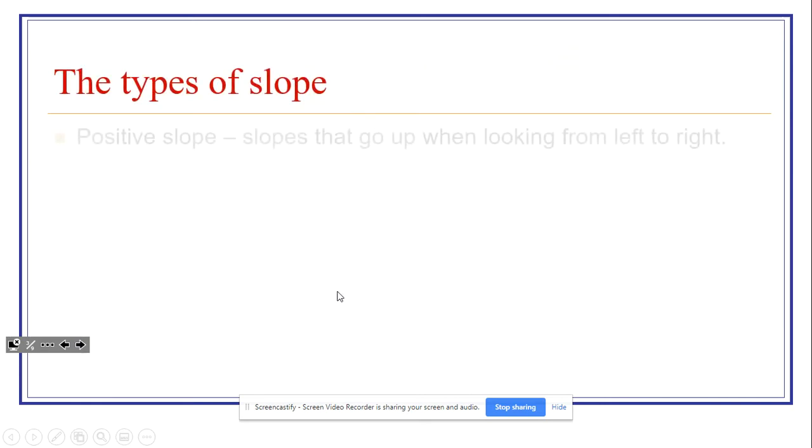The types of slope are as follows. Positive slope is slopes that go up when we're looking from left to right. When we're talking about slopes and how they move, we have to be thinking about how we read something, and we read everything from left to right. So if we're going up from left to right, that's a positive slope.